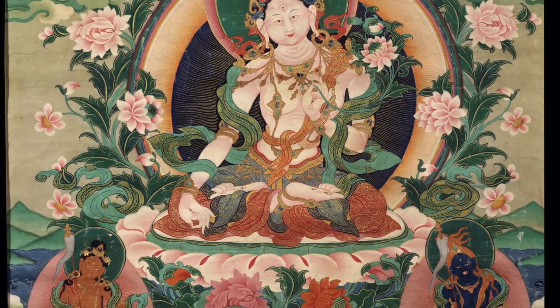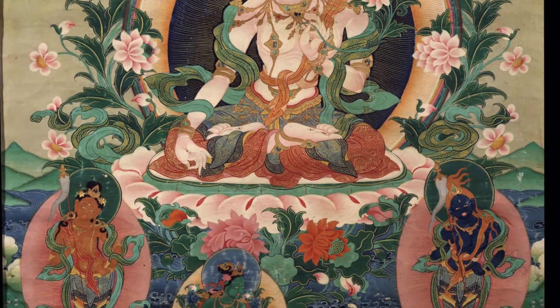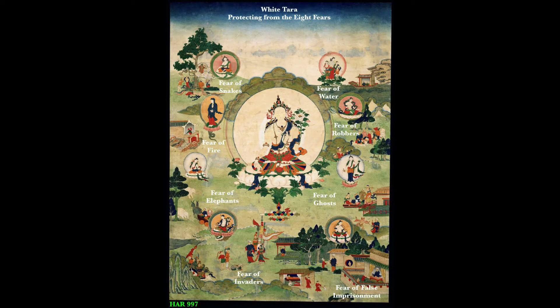White Tara is generally used for long life — it's regarded as a long life deity. But we also have many other types of Tara. It's not just dozens of different forms but probably more like scores of different forms.